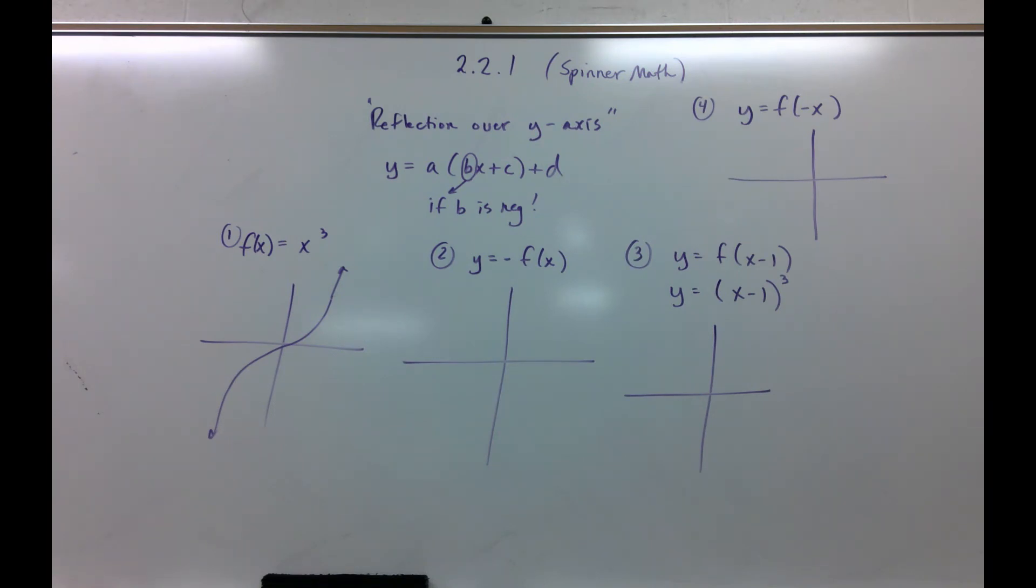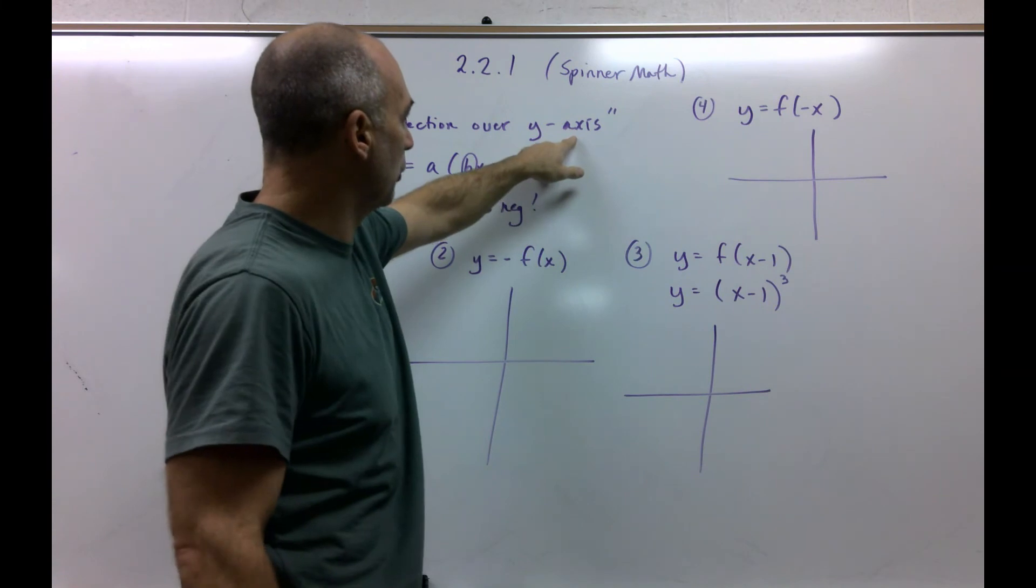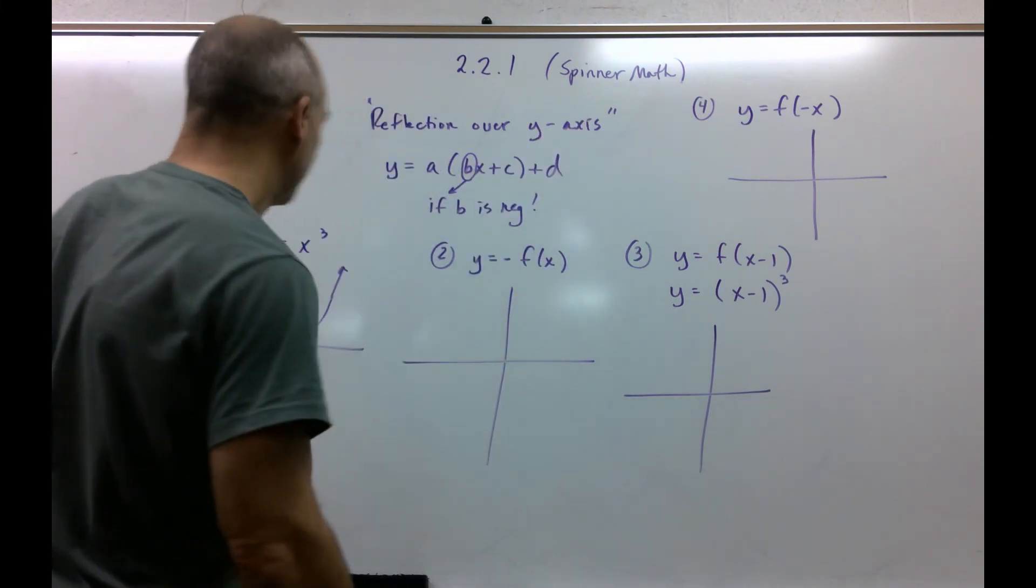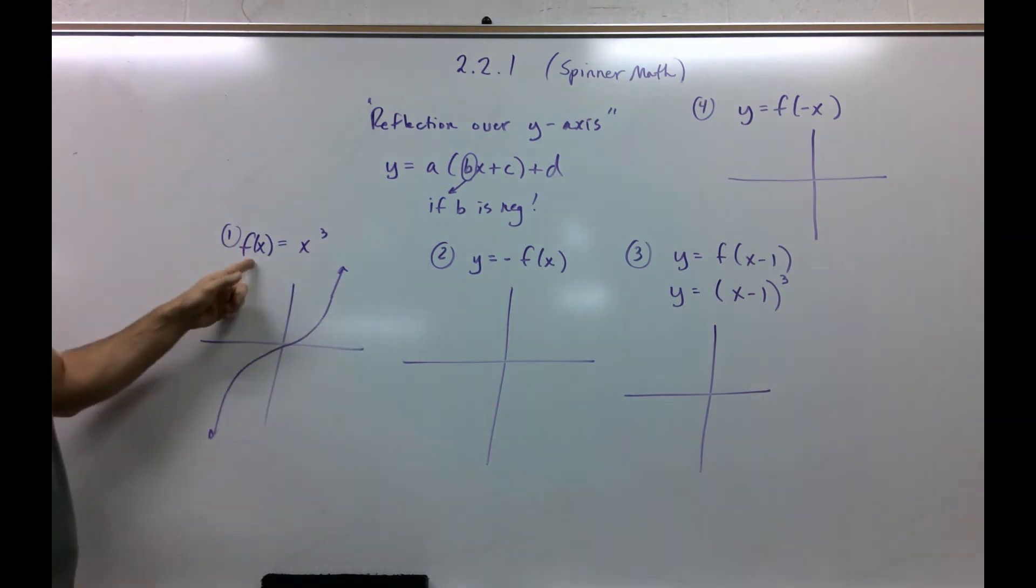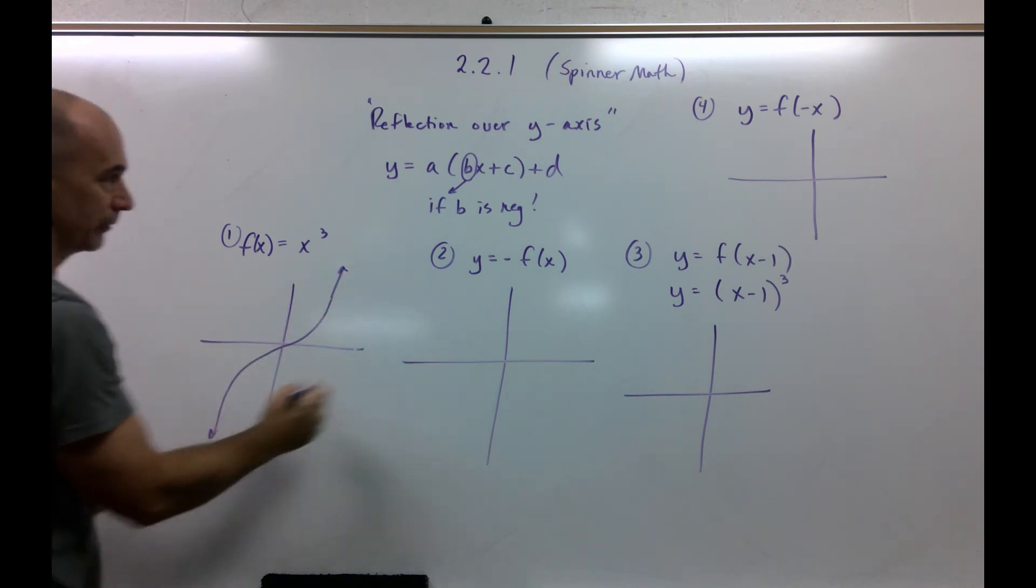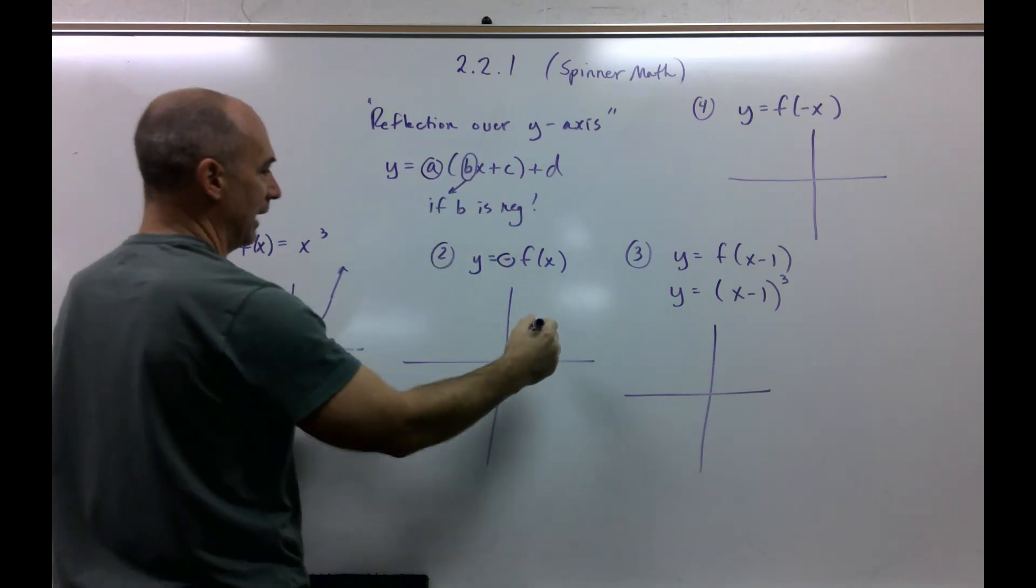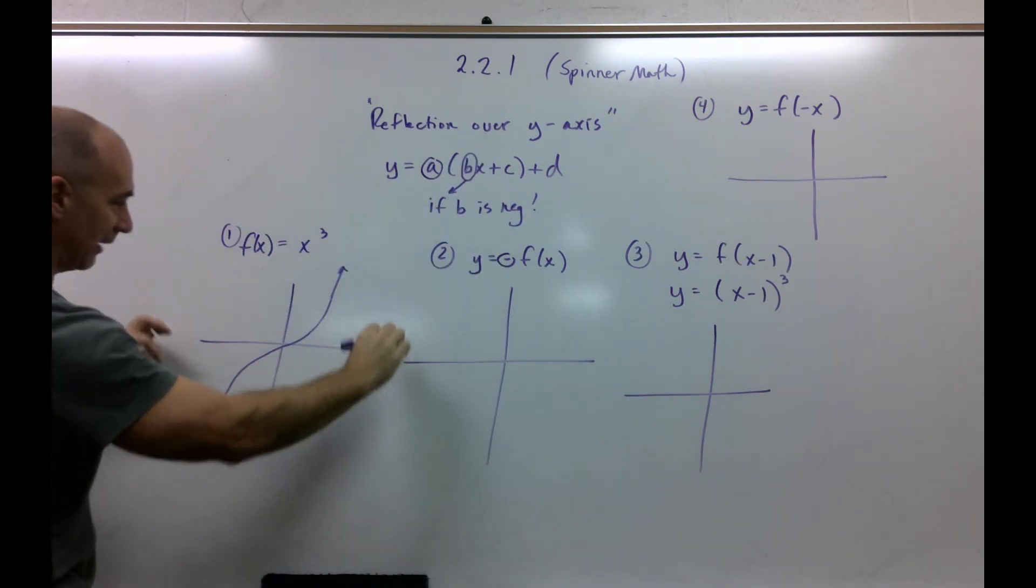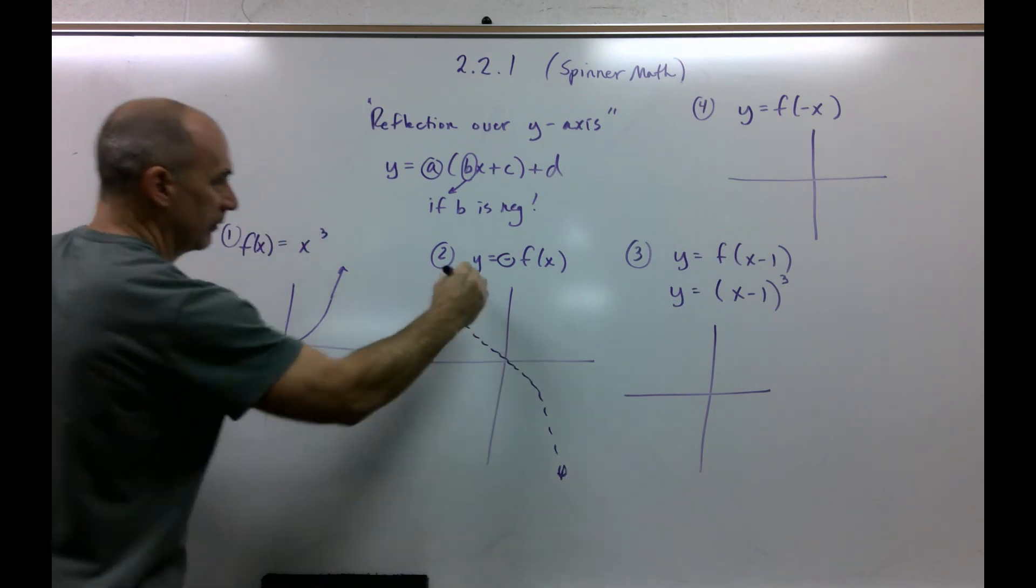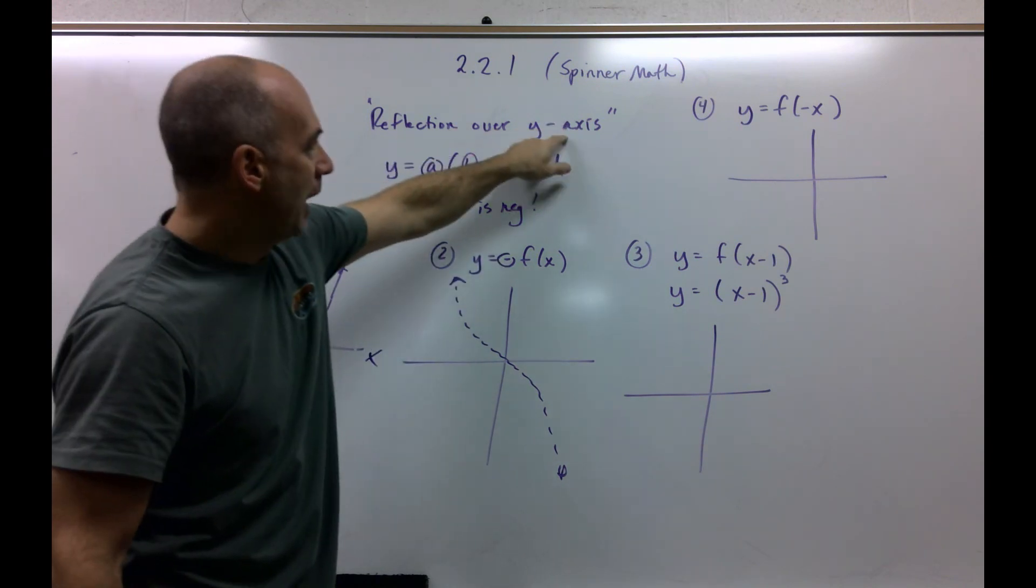All right. And now we're going to throw at you this whole idea of reflecting a function over the y-axis. So, start out pretty simple. Y equals, excuse me, f of x equals x cubed, which means y equals. There's your parent function. What does that do? Well, that's my a. If a is negative, it reflects this over the x-axis. So that would look like this. And you're like, well, I thought the title is reflecting over the y-axis.